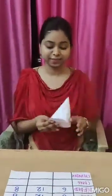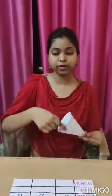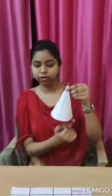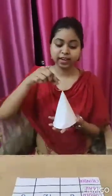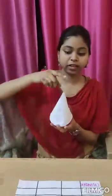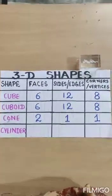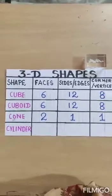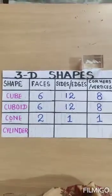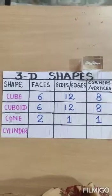Now let's find its number of edges. There is this circular edge here — so it has only one edge. And then the number of vertices: it has only one corner at the top, so it has only one vertex. I have written the answers in the sheet about the cone: number of faces, edges, and vertices.